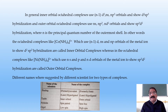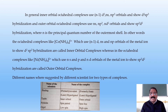In other words, octahedral complexes like Co(NH3)6³⁺, which use (n-1)d, ns, and np orbitals of the metal ion to show d²sp³ hybridization, are called inner orbital complexes. Whereas in octahedral complexes like Ni(NH3)6²⁺, in which ns, np, and nd orbitals of the metal ion are used to show sp3d2 hybridization, are called outer orbital complexes.